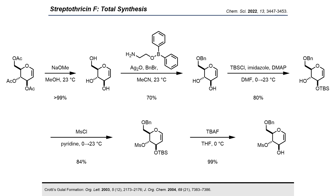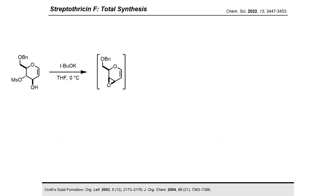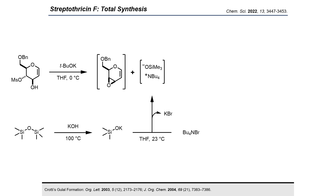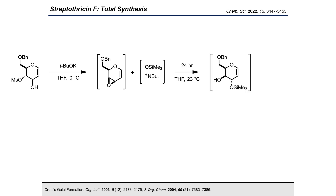Exposing our inversion precursor to potassium tert-butoxide affords an in-situ epoxide. Upon treatment of this epoxide with freshly prepared in-situ tetrabutylammonium trimethylsilanolate — obtained over two steps from hexamethyldisilane — we observe regioselective epoxide opening at the three position. Upon aqueous workup, the TMS group falls off to afford our benzyl gulal inversion product. As a quick review, over six steps and 31% yield we have converted the starting glucal sugar into the gulal sugar.